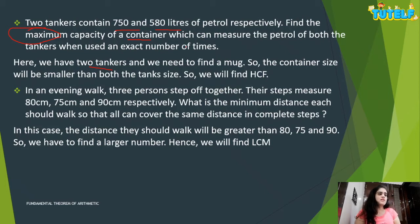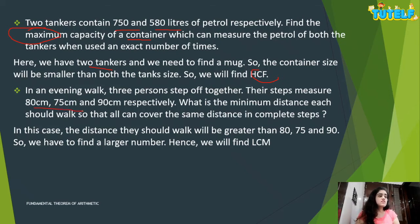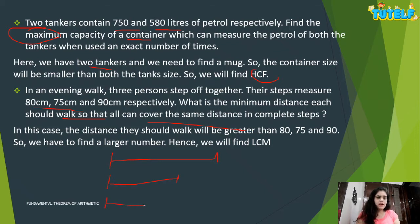Example: In an evening walk, three persons step off together; their step measures are 80 cm, 75 cm, and 90 cm respectively. What is the minimum distance each should walk so that all can cover the same distance in complete steps? The required distance must be greater than all three step sizes, so we find LCM.